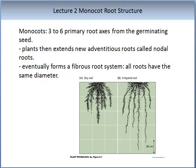After germination, monocot roots develop with three to six primary root axes from the germinating seeds. The plants tend to extend new adventitious roots called nodal roots, which eventually form a fibrous root system where all roots have the same diameter. On the slide, you can see the structure of a monocot root system: on the left-hand side is a monocot root system developed in dry soil, while on the right-hand side is one developed in irrigated soil.